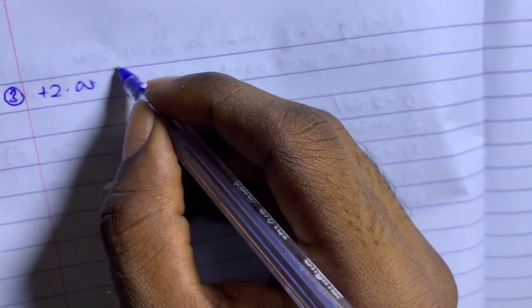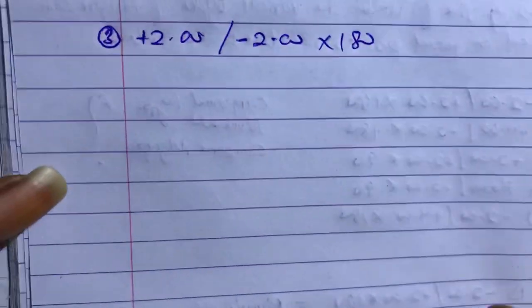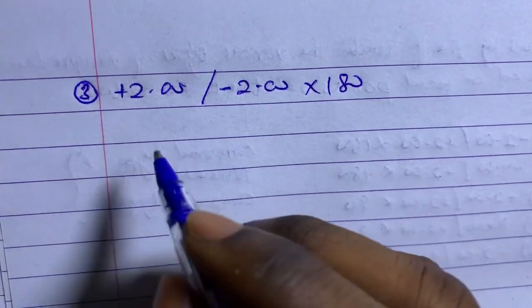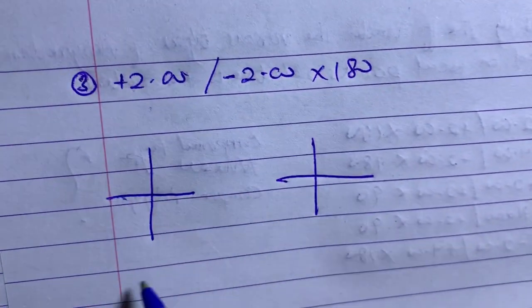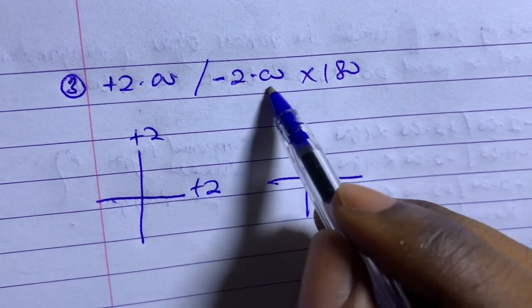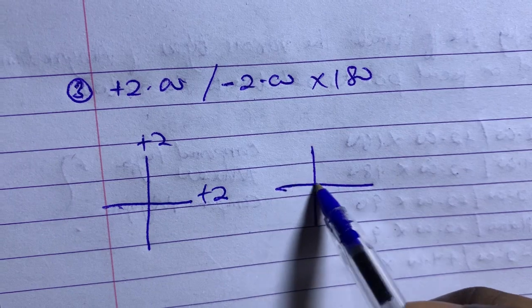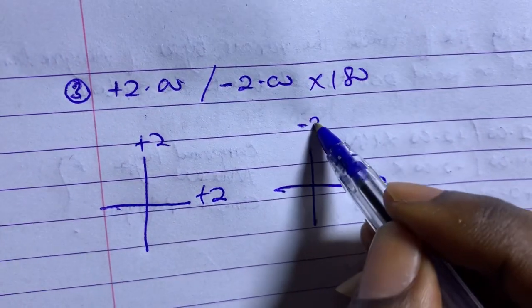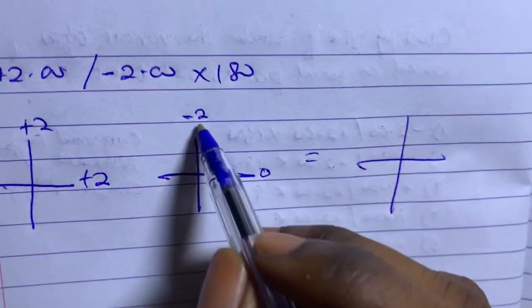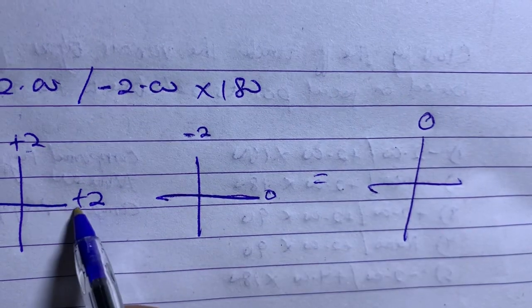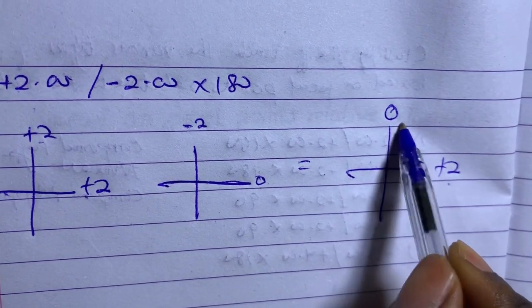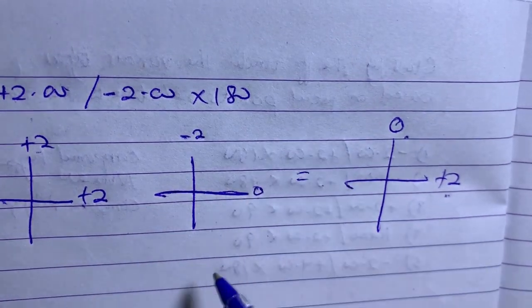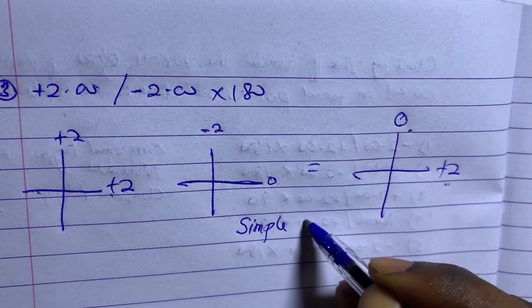Example three: plus two combined with minus two axis 180. First draw the optical cross. For the sphere, plus two appears on each meridian — plus two here and plus two here. For the cylinder, minus two axis 180 means the power lies at 90, so I place minus two at 90 and zero at 180. My final cross: plus two plus minus two gives zero, and plus two plus zero gives plus two. Zero means on the retina, plus two means hyperopic — behind the retina. So this becomes simple hyperopic astigmatism.